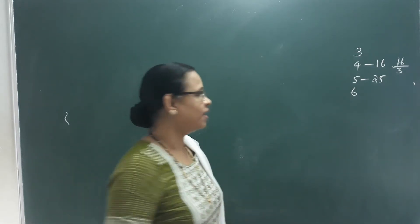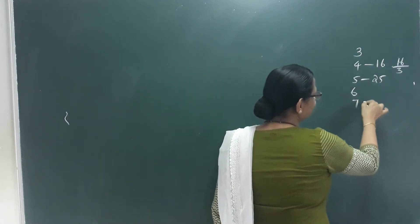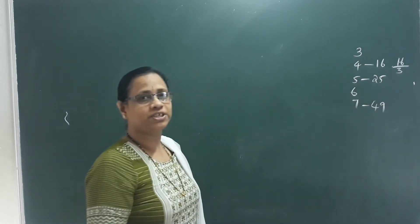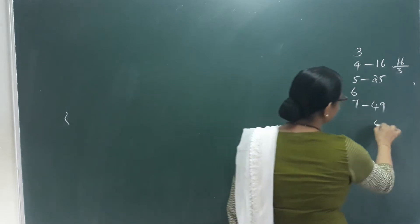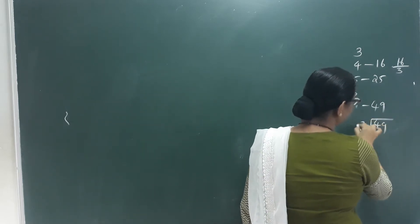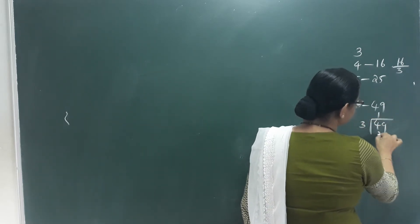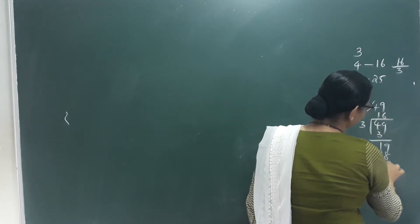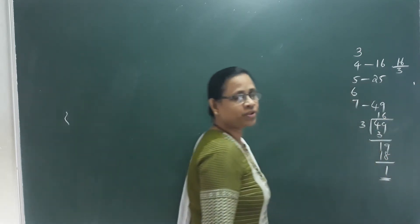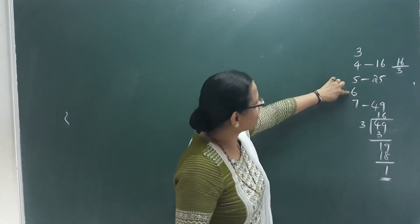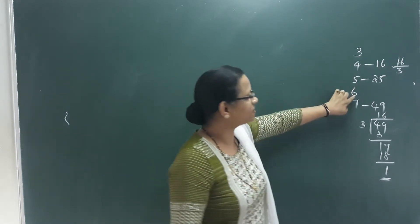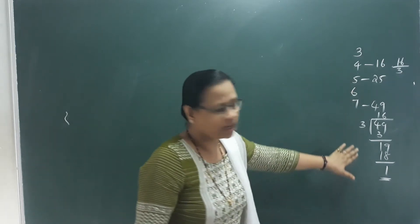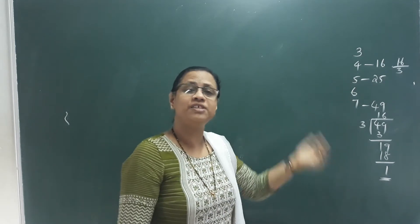Now we take 7: 7 squared is 49. Dividing 49 by 3: 3 into 16 is 48, remainder is 1. So for these natural numbers, if we take any natural number and square it, then divide by 3, we always get remainder 1.